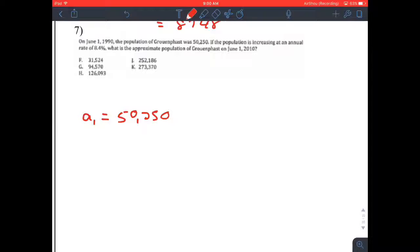If the population is increasing at an annual rate of 8.4%, so let's talk about that. To get from one number to the next, we're going to multiply by 108.4%. Because the population doesn't become 8.4% of the previous population, you've got the entire population plus 8.4% more. So this rate is 100% of the population plus an additional 8.4%, which as a decimal is 1.084.